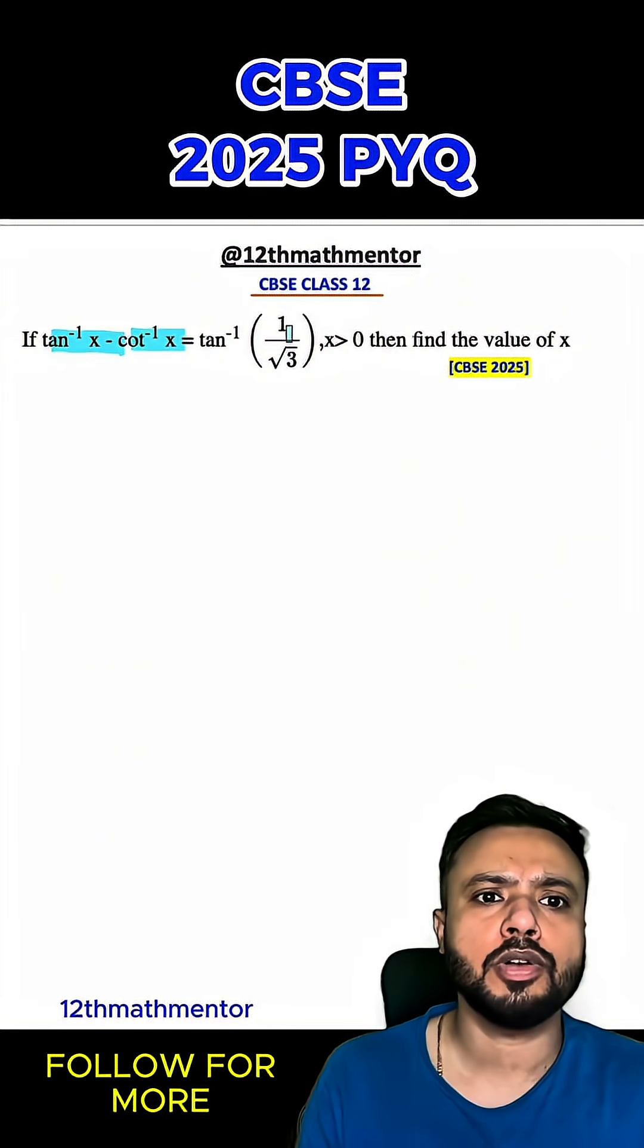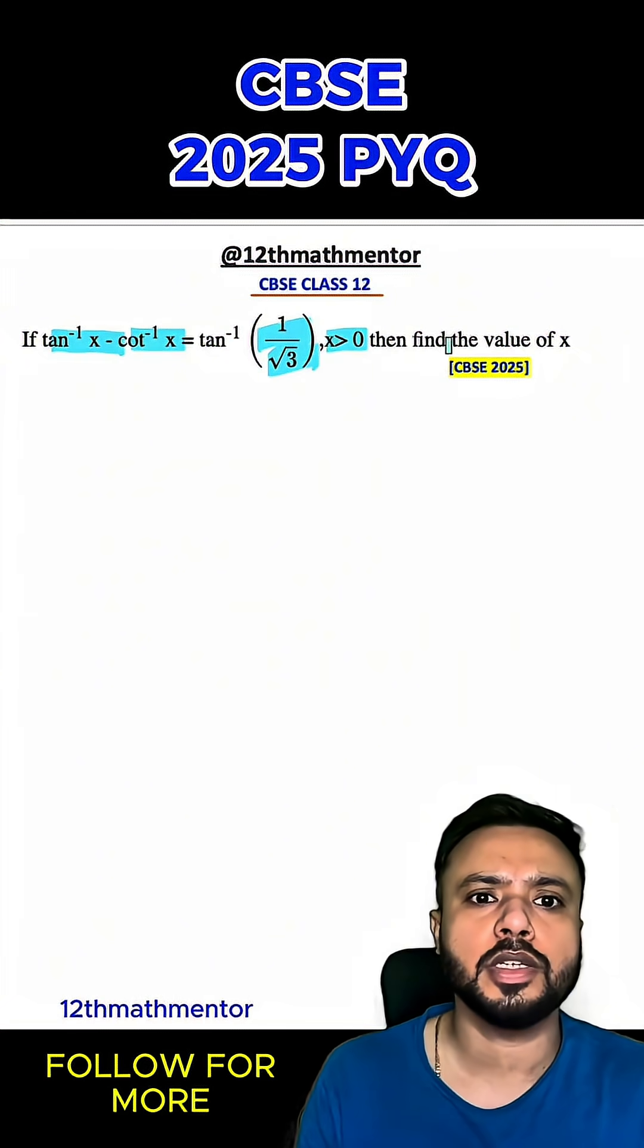In this question, it's given that if tan⁻¹(x) - cot⁻¹(x) = tan⁻¹(1/√3) and x > 0, then we have to find the value of x.